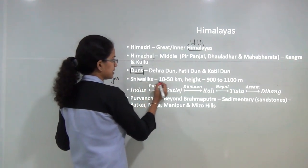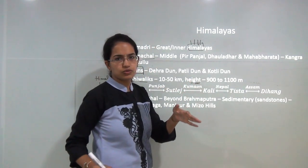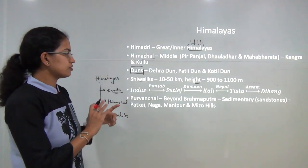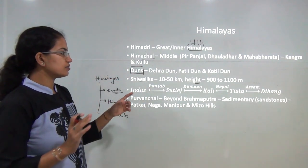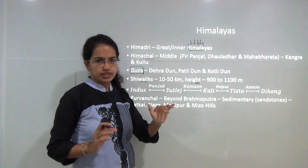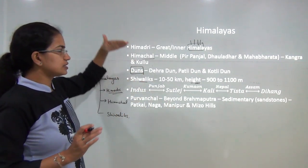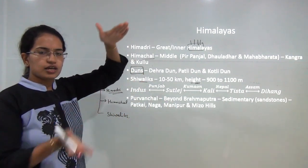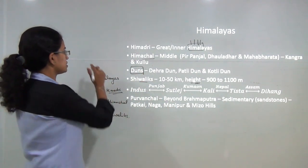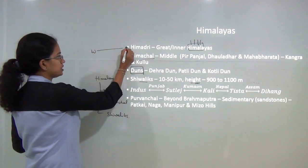The Shivalik range has an average height of 900 to 1,000 meters and an expanse of nearly 50 to 110 kilometers. This was the north-to-south range division; there is another division which moves from west to east.